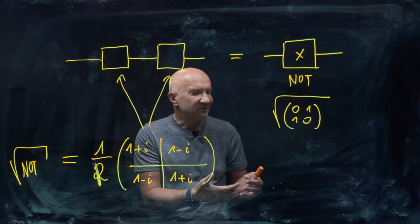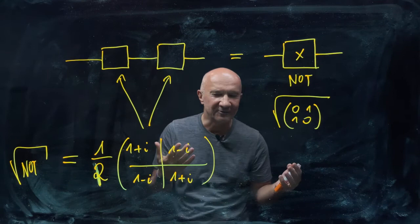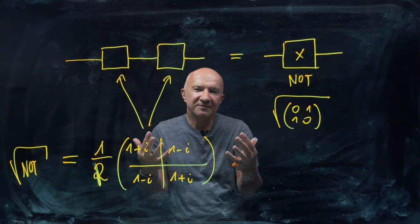You cannot just live in denial, saying well, I live in my abstract world, I don't care about what you can do or cannot do in nature. You have to be realistic. If you don't want to be in denial, you have to incorporate the square root of NOT into the repertoire of logical operations. That makes the whole mathematical system much richer, much more beautiful, and much more interesting to explore and to push forward.